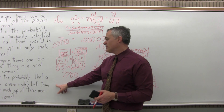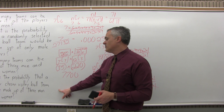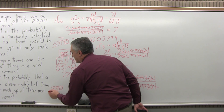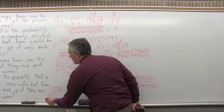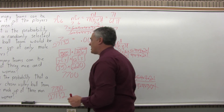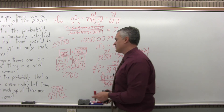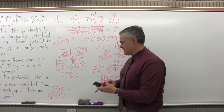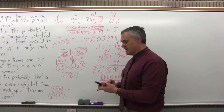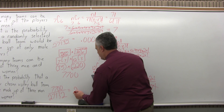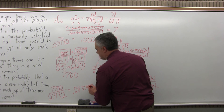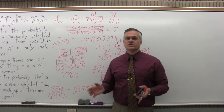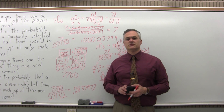The last question: what is the probability that a randomly chosen volleyball team will be made up of 3 men and 3 women? There are 7,700 different ways to have a volleyball team with 3 men and 3 women out of 27,132 different possible volleyball teams from this class of 19 people. Dividing: 7,700 divided by 27,132 is approximately 0.2838, a little more than a 28% probability that your volleyball team, if chosen at random, would have 3 men and 3 women.